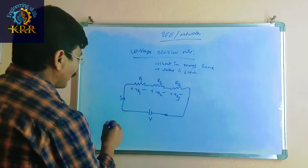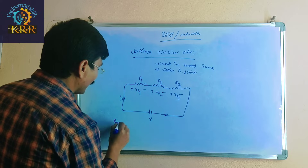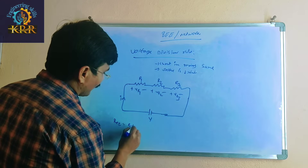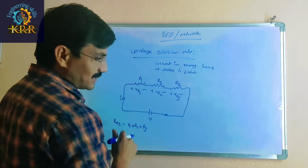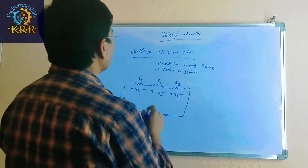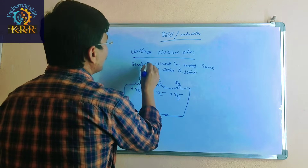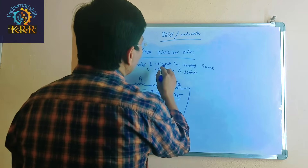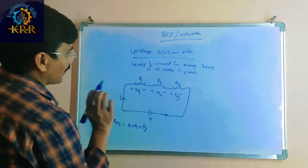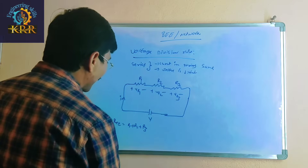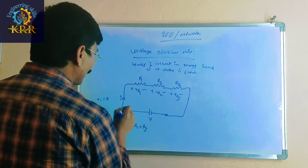First, you find out the equivalent resistance. R_equivalent is equal to R1 plus R2 plus R3, because these three resistors are in series. In the series voltage division rule, current is the same and voltage is different.